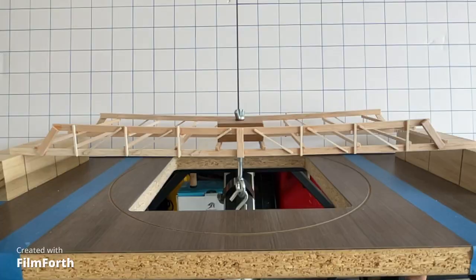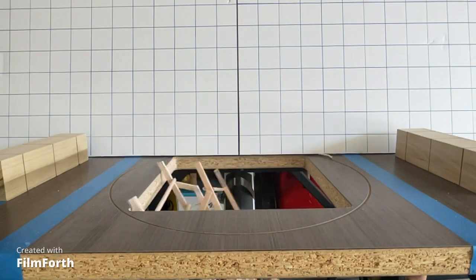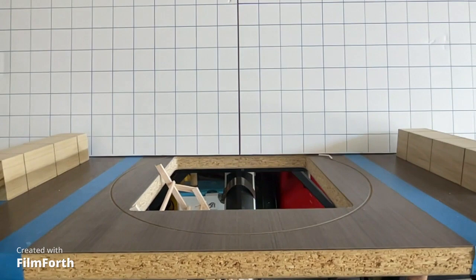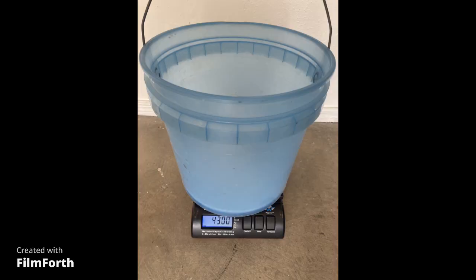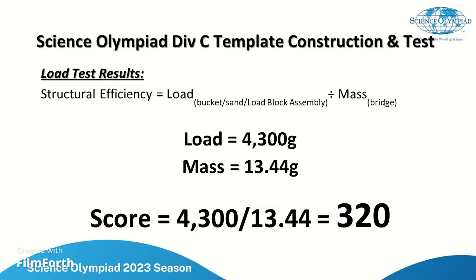Well that was exciting. Now we get to measure the load held which is 4300, and putting that into the calculation for the structural efficiency is 4300 divided by 13.44 gives you a strength ratio of 320.